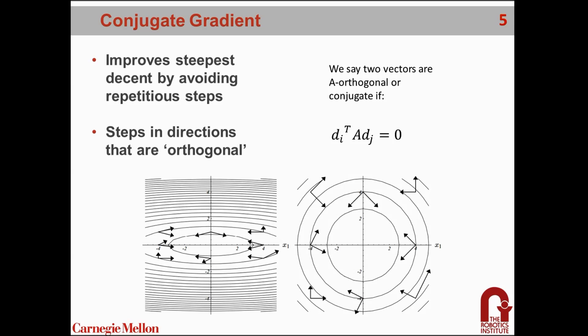We define two vectors to be A-orthogonal if di transpose a dj equals 0, which is a little bit abstract, but you can visualize it by these plots. This is a contour plot with pairs of vectors that are A-orthogonal. If you can imagine that this sheet of paper is stretchable, so you can warp it and stretch it in different directions, then you can imagine stretching it out so that the contours are circles. That results in what you see here, where now the vectors are orthogonal in the conventional sense, which is the dot product is 0, and they are perpendicular.